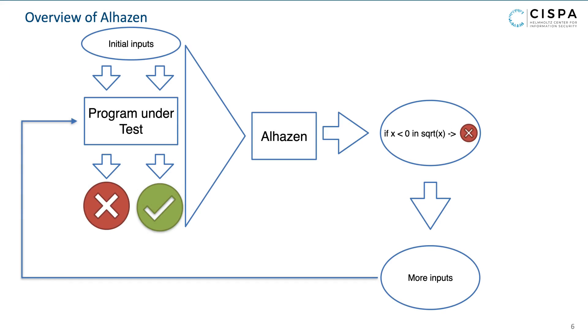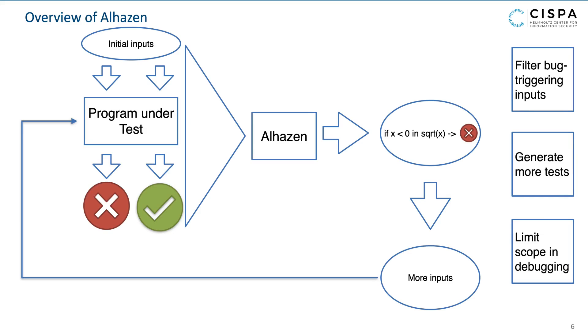To summarize, Alhazen shows that a decision tree learner and a test generator can be combined into a feedback loop to generate a model of program behavior, which can be used to filter bug-triggering inputs, generate more tests, and limit scope in debugging.